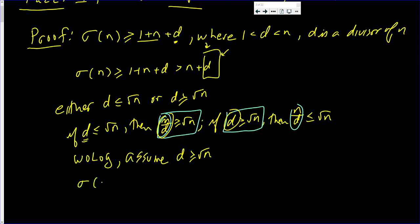So, we have that σ(n) is greater than n plus d, which is greater than n plus the square root of n, since d is greater than the square root of n.